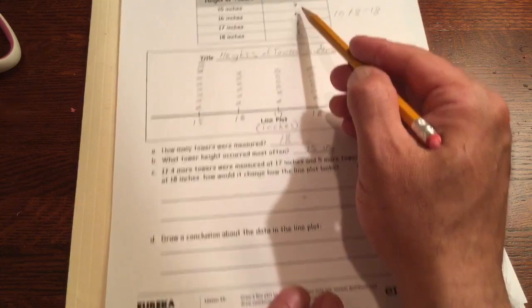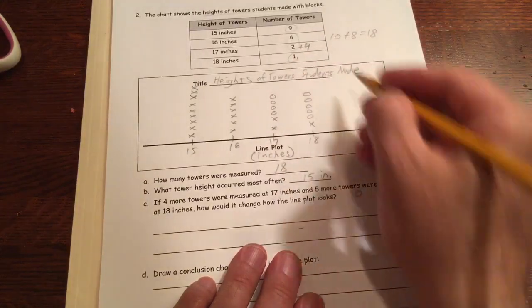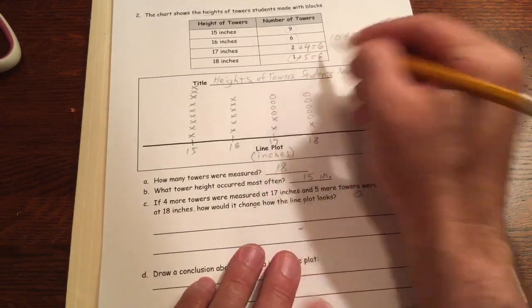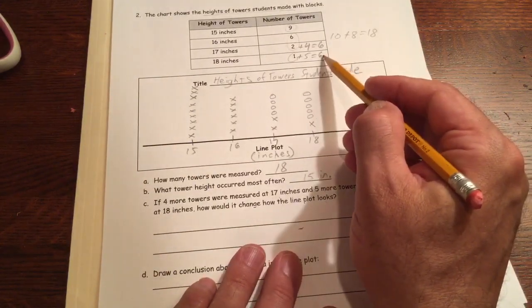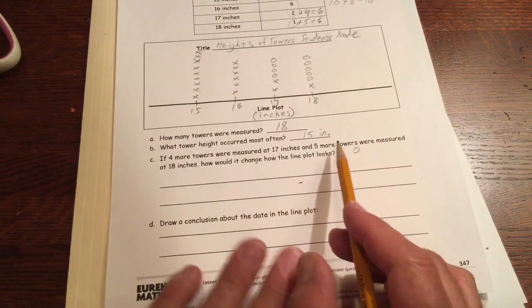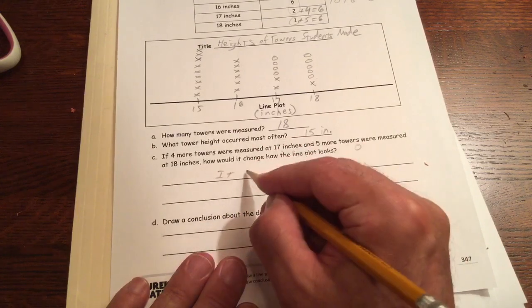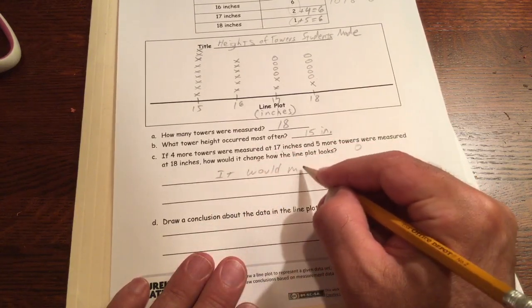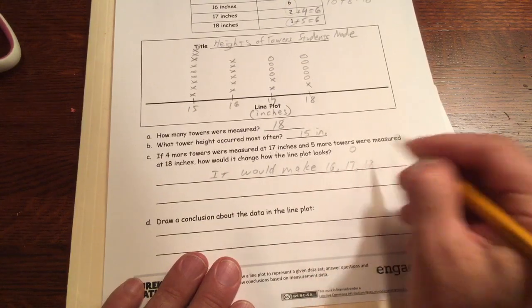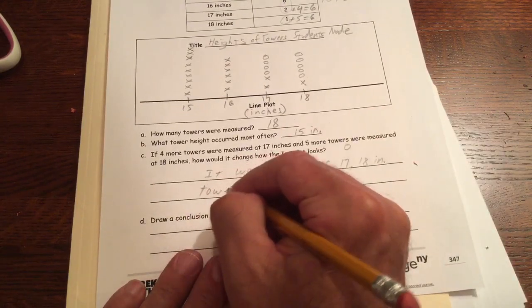And now look at this. I mean, you could also have figured it out by looking at the chart, right? So if you had four more 17s, you could have looked at that and saw that that's going to be a six. And then five more at 18, so that's going to be a six. You could just look at the table and see six, six, and six. And that means they're all, that would all be the same. How would it change how the line plot looks? It would make 16, 17, and 18 inch towers equal.